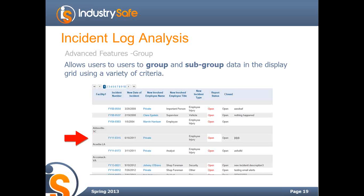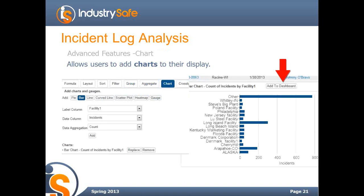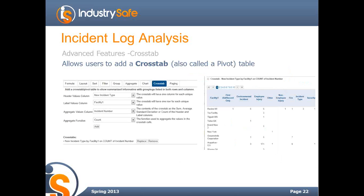You can also group data — for example, look at all data by a certain facility or by department within a facility. You can count data, so you can see how many incidents you have at each facility along with the incident total. One of the favorite features is you can create your own charts: choose what kind of chart to display, and then hit the 'add to dashboard' button to add that chart to the dashboard. There's also a cross-tab or pivot table that you can create as well.